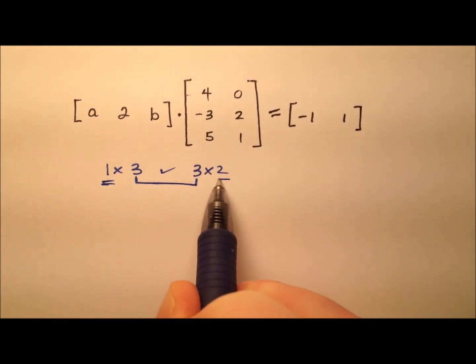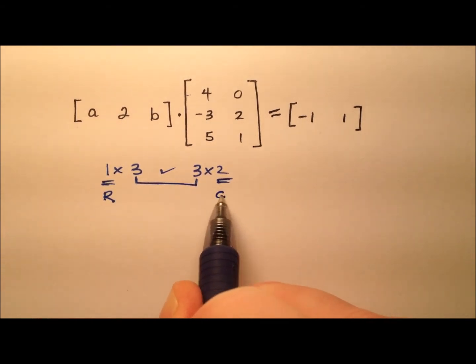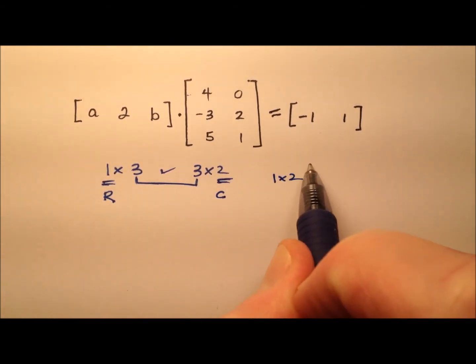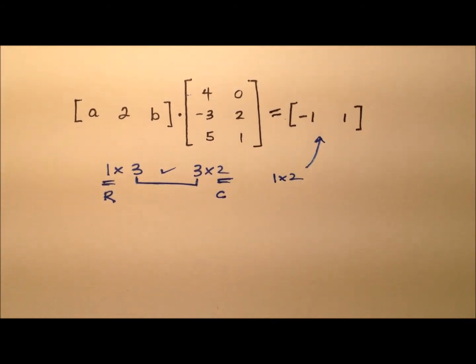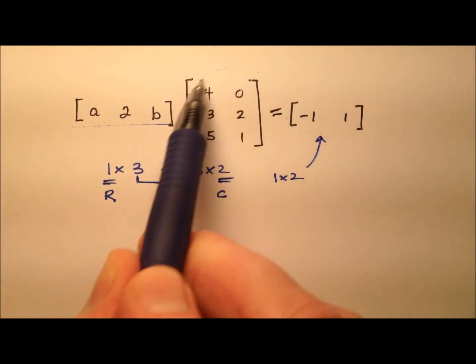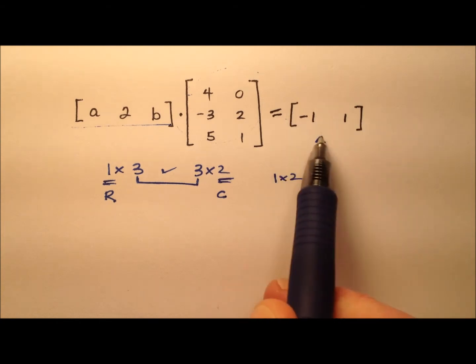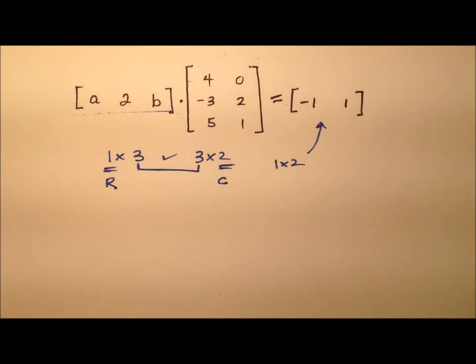That means the dimensions of the product matrix will have one row and two columns, so it'll be a one by two, and you'll notice this is one row with two columns, so we're good to go. So multiplying this first matrix by this second matrix, I get this matrix with just two entries, negative one and positive one.